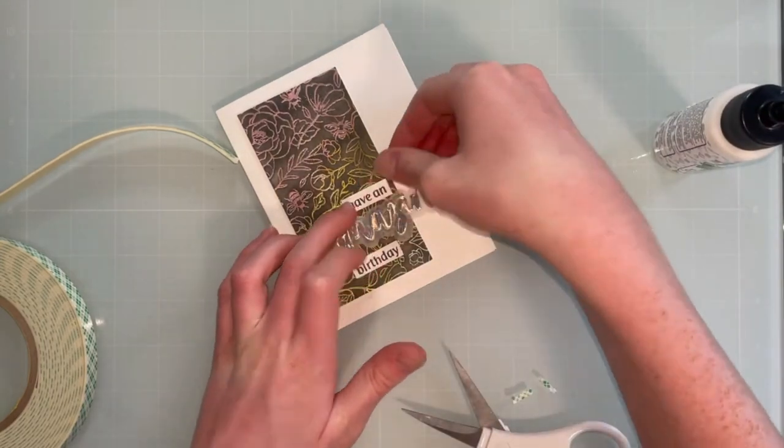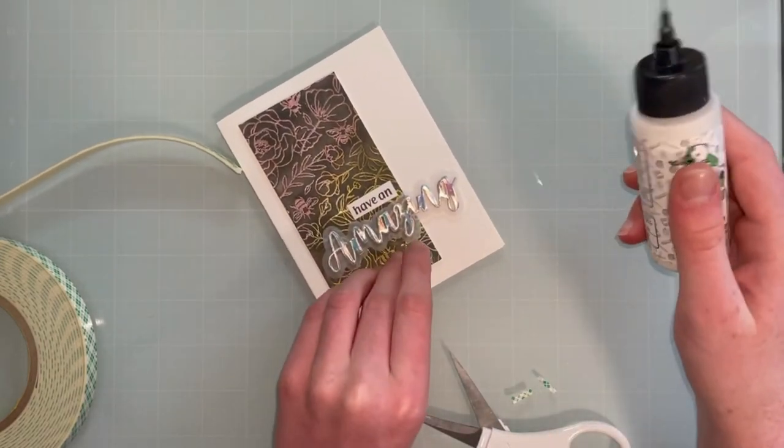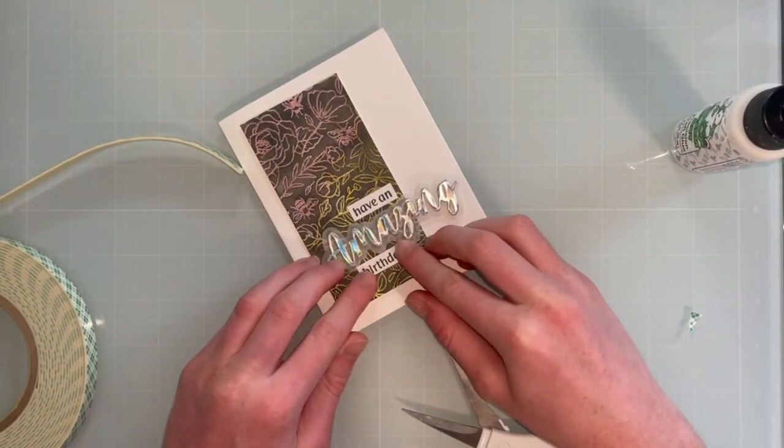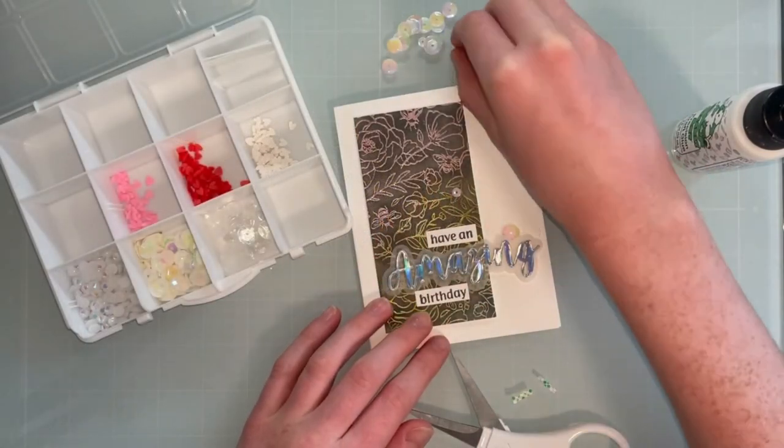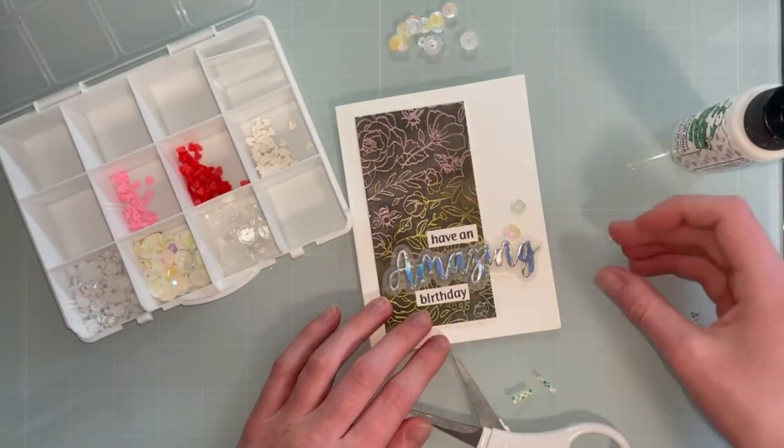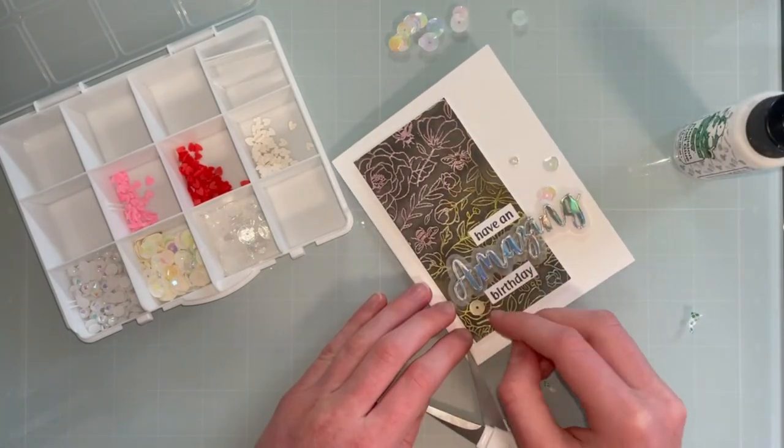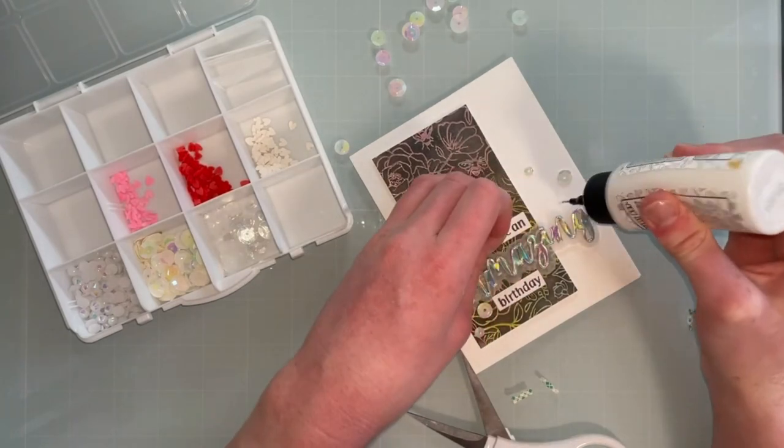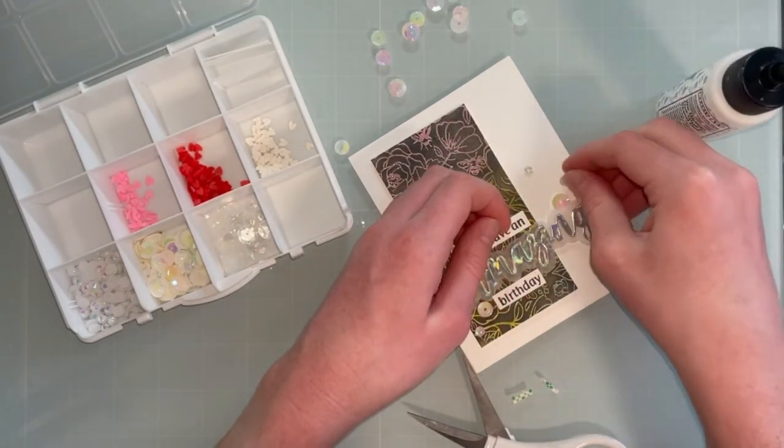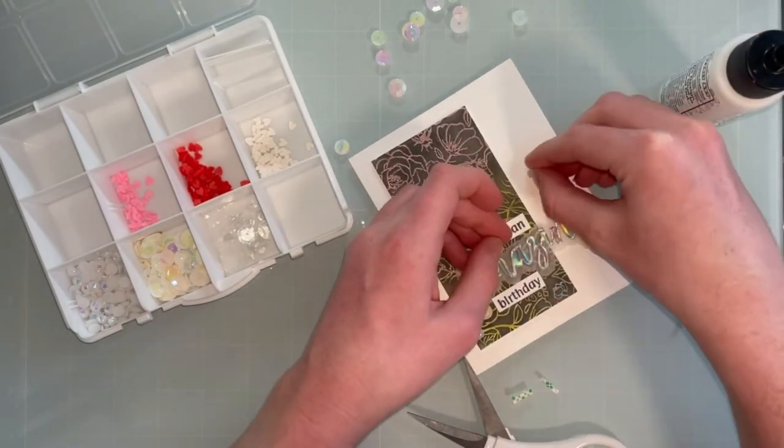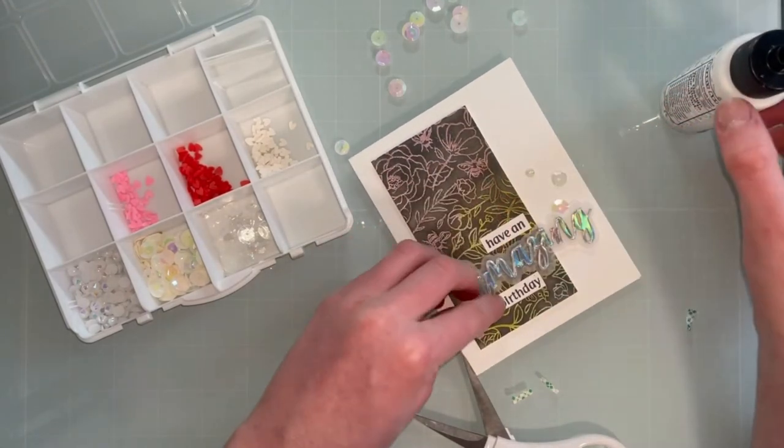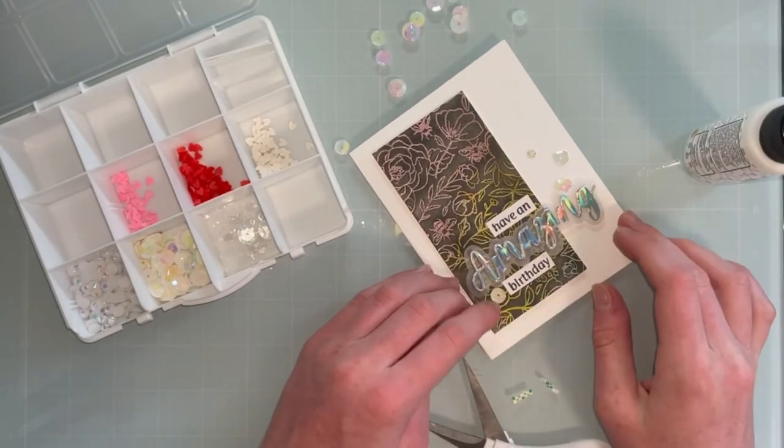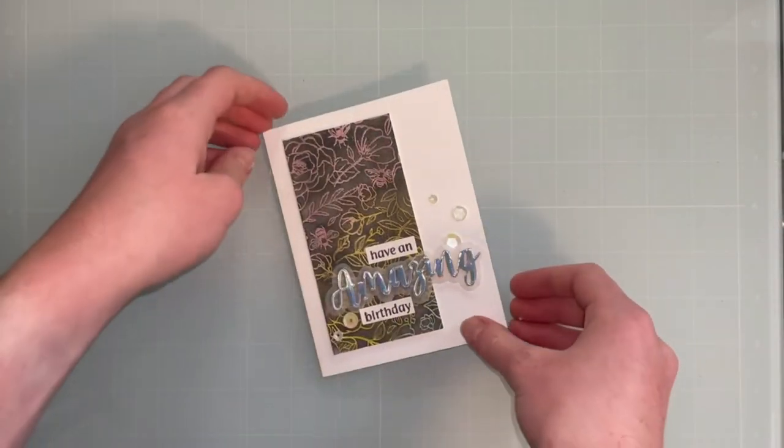And this one I have, I use the sentiment have an, and then birthday. So the whole sentiment reads, have an amazing birthday. And I think that's just fun as well. And then I added some little sequins here onto this card. I just kind of tucked them in where I thought, and I tucked them behind the sentiment, which helps connect the piece a little bit more and connect the card and the different elements together a little bit. So once I have that, this is the completed card for you.